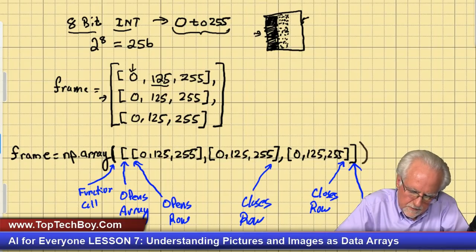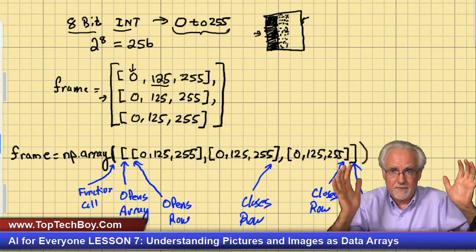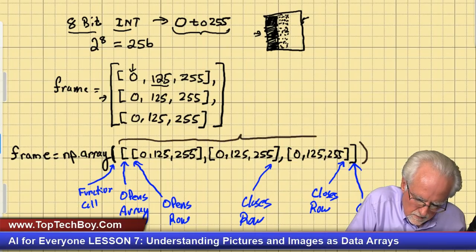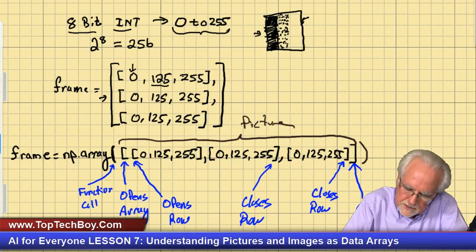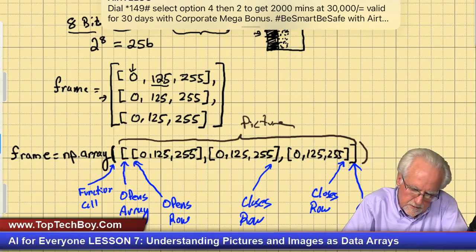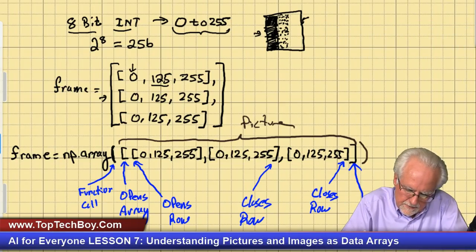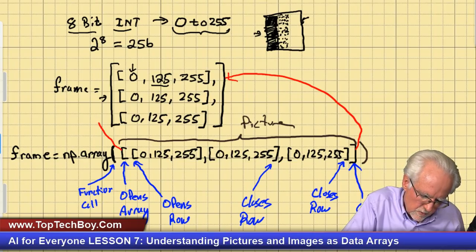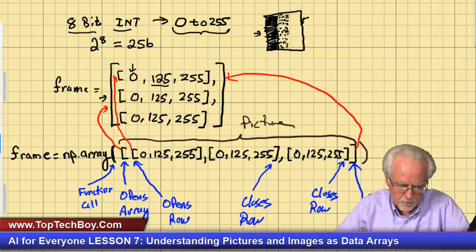What I forgot was to close the function — I need to close it with a round parenthesis. So outside you've got the parentheses for the function call, and inside the actual data. The picture starts with the open bracket. This is the outer open bracket for the array, this opens the row, and this closes the row. This closes the array. That's how you map the two-dimensional structure to what you type in.